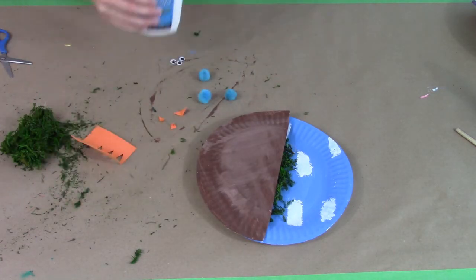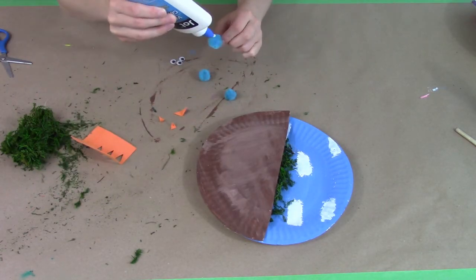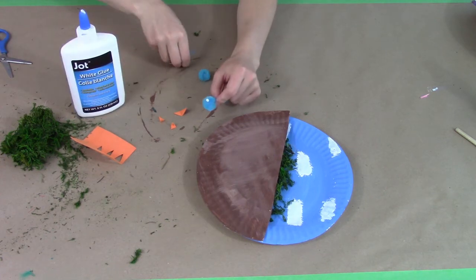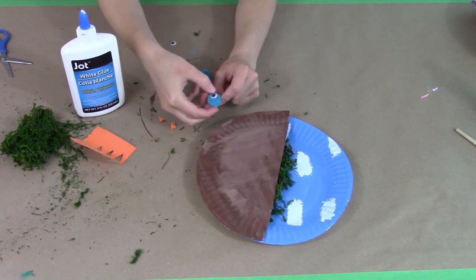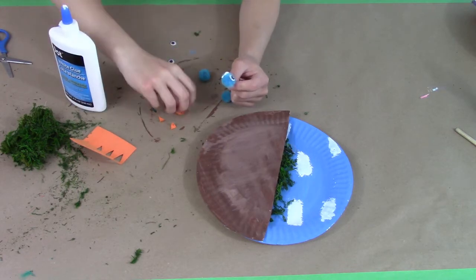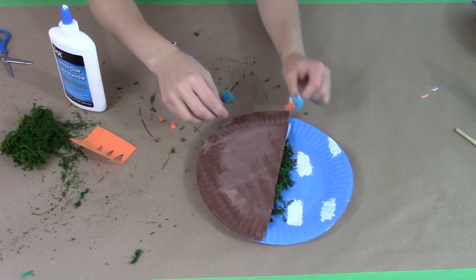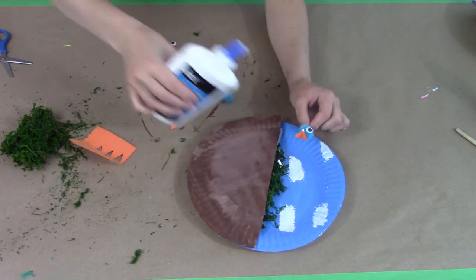Then to decorate our birds we're going to grab a pom-pom, some glue, then you're going to grab a googly eye and stick it on and then glue on your beak as well. You'll do this for all three birds and then you can attach the birds to the paper plate.